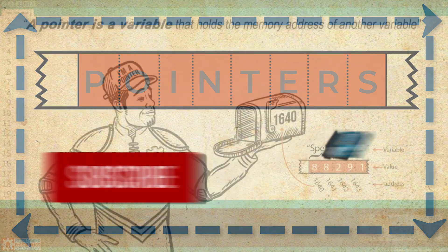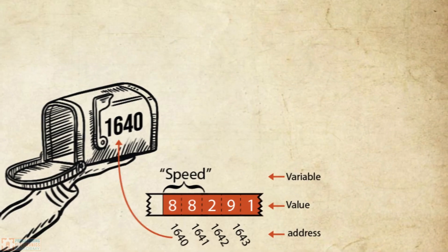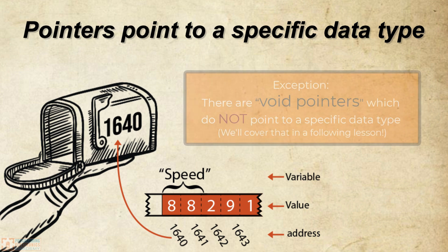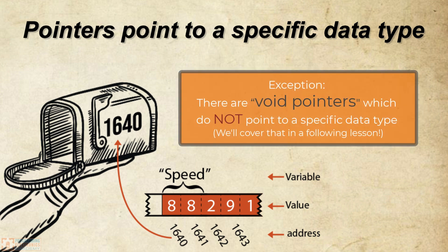So let's talk about a couple things. First, pointers point to a specific data type. So just like an integer variable is designed to hold integer values and not float values, an integer pointer is designed to point to an integer variable, not a float variable.